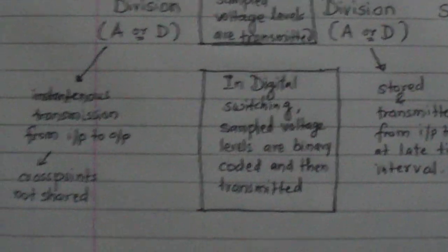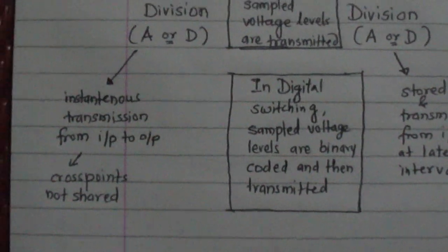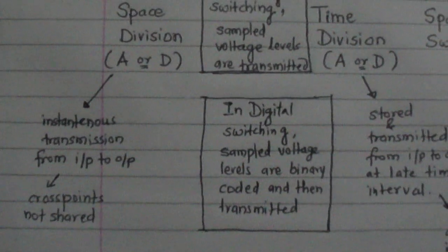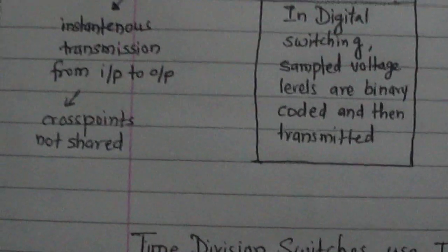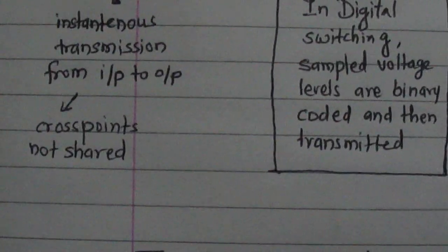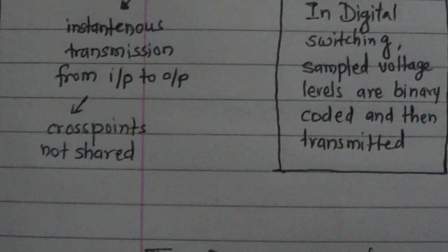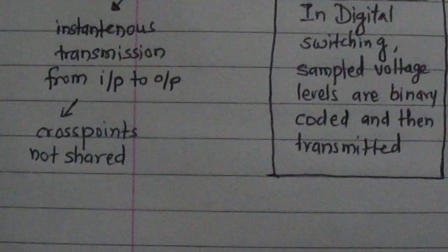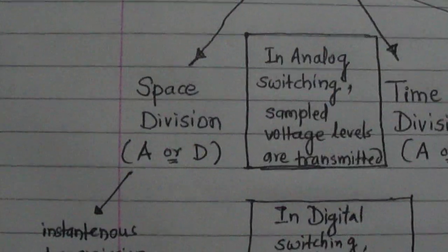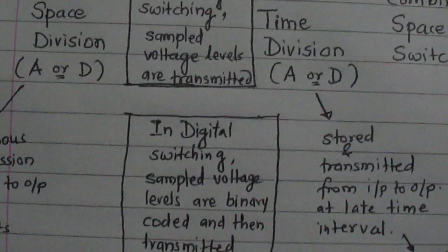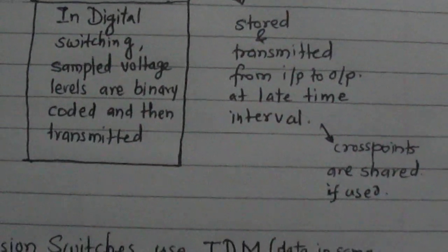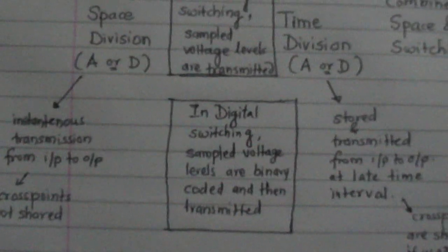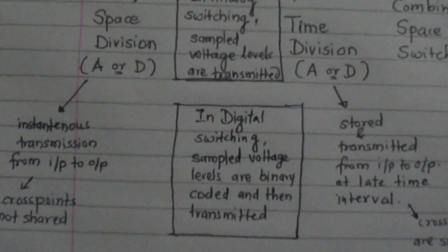So the basic difference is: space division switching is instantaneous, whereas time division switching is not instantaneous. In space division switching, cross points are used for establishing a connection between input and output, and those cross points are not shared. In time division switching, cross points can be shared.